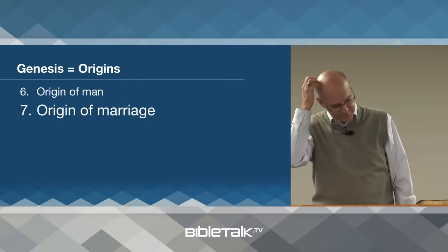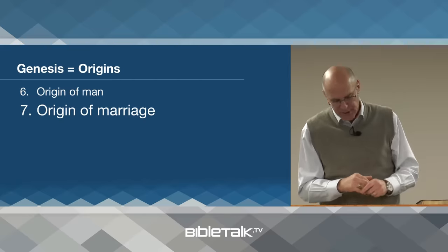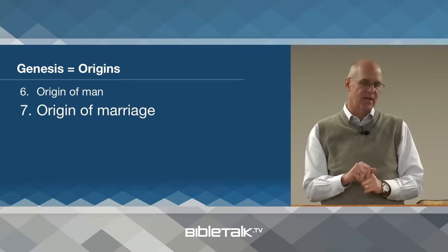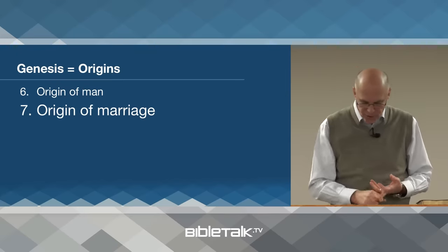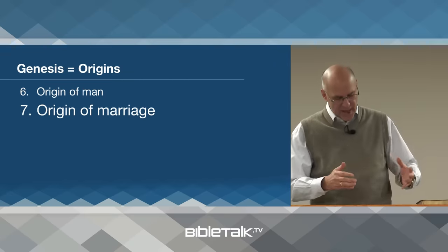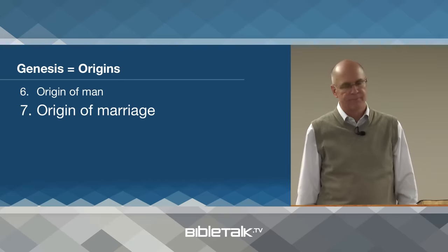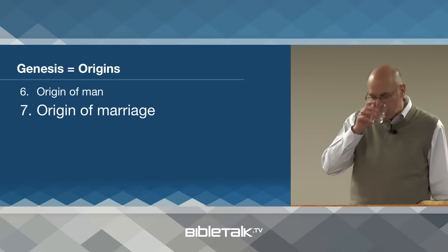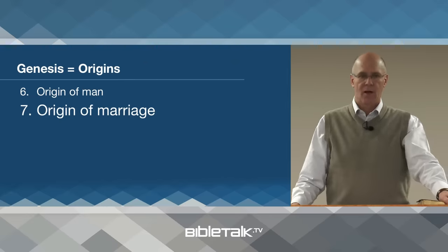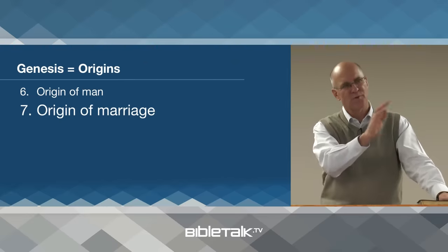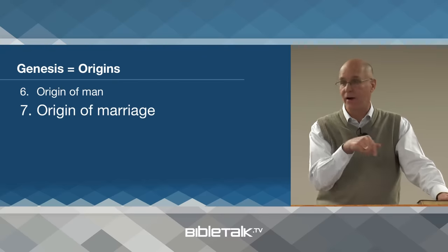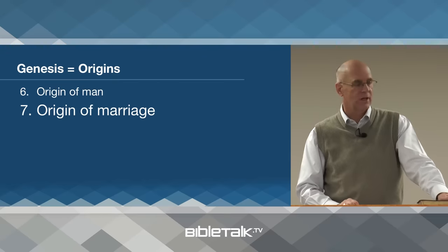Number seven: the origin of marriage. Genesis records the universal and stable institution of marriage and the home in a monogamous, patriarchal, stable society. Polygamy, infanticide, adultery, paedophilia, divorce, homosexuality — all of these things come later as this original model began to disintegrate. We look at our society and see gay marriage being legalized in various states and all kinds of immorality applauded in the media, but it goes back a long time — not just our generation. The beauty of Genesis is we find out why this has happened.